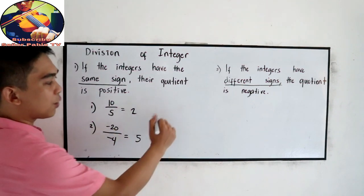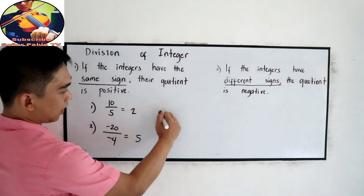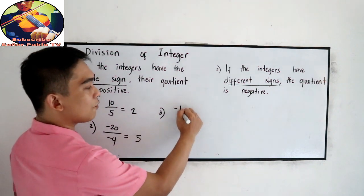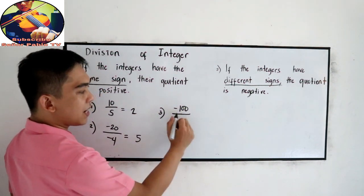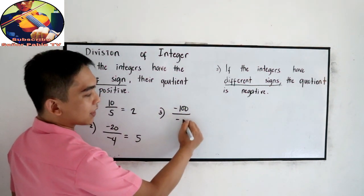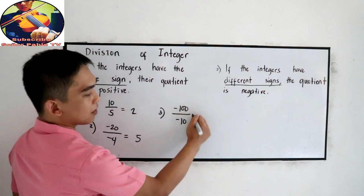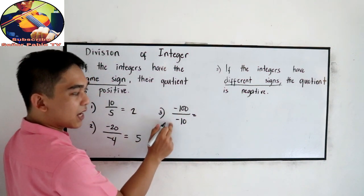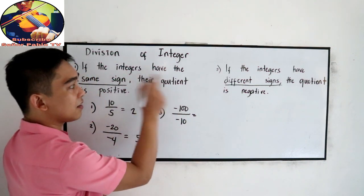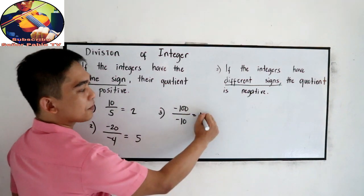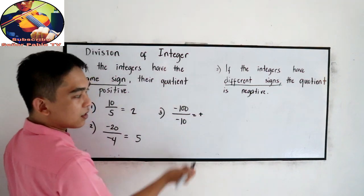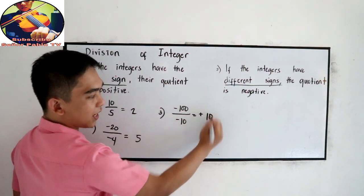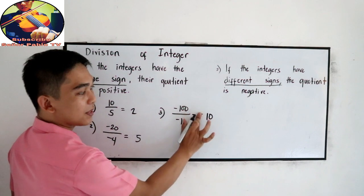Another one: negative 100 divided by negative 10. Negative divided by negative, so they have the same sign. So that is positive — 100 divided by 10 is positive 10, or simply 10.